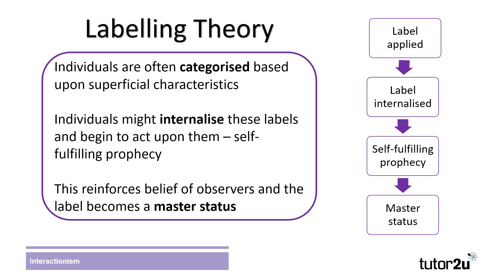Another aspect of interactionist approaches is what is called labelling theory. This suggests that individuals will react to being viewed in a certain way by others. People are often stereotyped in society based upon physical and social characteristics, and this leads to people forming judgements on that person. This process is called labelling. For example, pupils in a school may be labelled as intelligent or alternatively lazy. If this label is reinforced, the pupil may internalise that label, believing themselves to be what others have suggested they are, leading them to act upon the label.